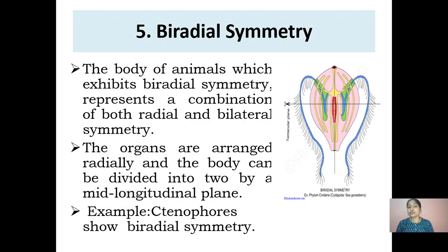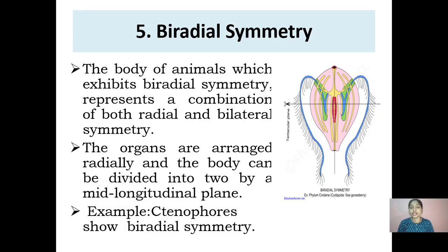Moving on to biradial symmetry: the body of animals exhibiting biradial symmetry represents a combination of both radial and bilateral symmetry. The organs are arranged radially and the body can be divided into two by a mid-longitudinal plane. An example is Ctenophora.